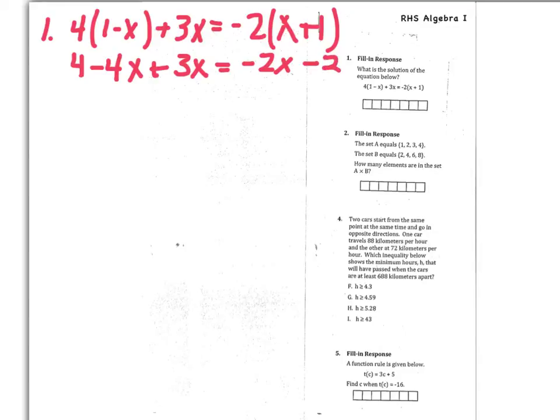So then the second step will be to combine like terms. On the left-hand side, I have two terms that have x in them, so those are my like terms. And when you combine them on the same side, you do not change the sign. So I've got negative 4 plus 3, so that's going to give negative 1x.